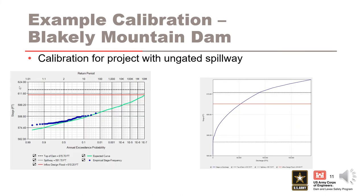Even with practically zero outflow in the model, the observed stages still plot higher than the model results, especially in the most frequent events. This can be resolved by further modifying the stage-discharge curve because the outflow can't be less than zero. The difference is due to regulation and operation of the project. The frequent annual maximum events are mostly due to the regulation based on seasonal guide curves and not due to flood events.